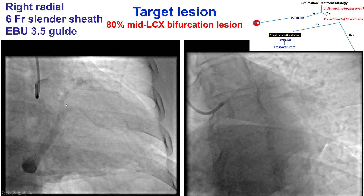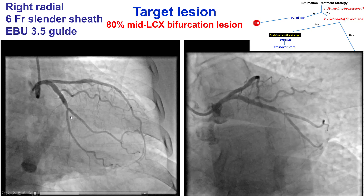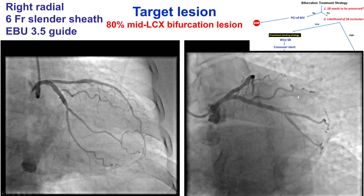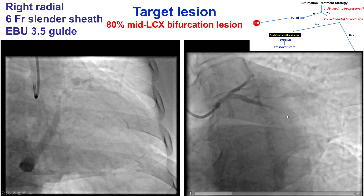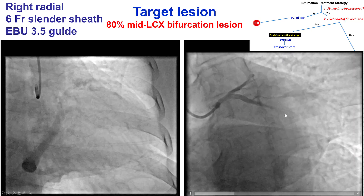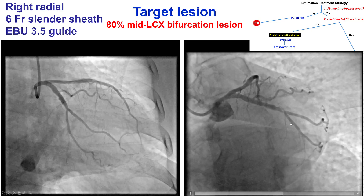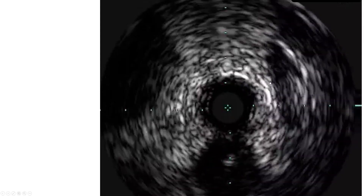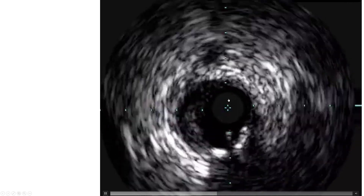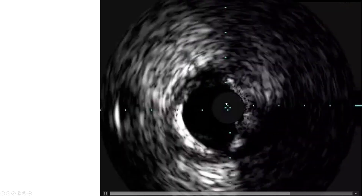Here is an example: a patient who has a bifurcation lesion in an obtuse marginal branch. The likelihood of losing any of the branches seems to be low because there is no significant disease at the ostia of either of them. However, both branches are large and need to be preserved. IVUS was performed. There is not much disease distally; the disease is mainly proximal. This is essentially more of a Medina 1, 0, 0 bifurcation.